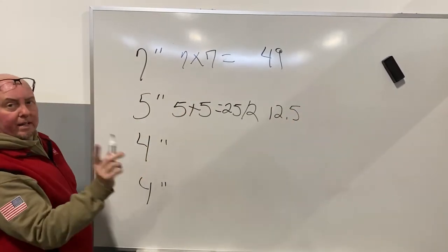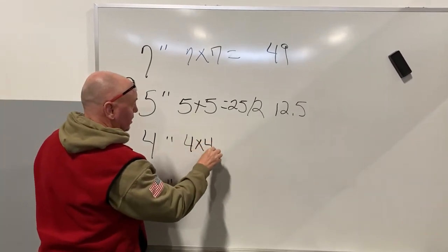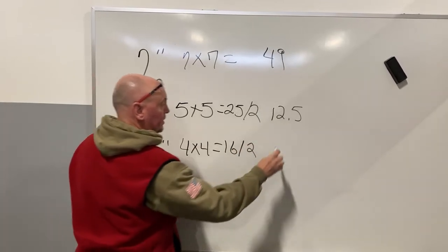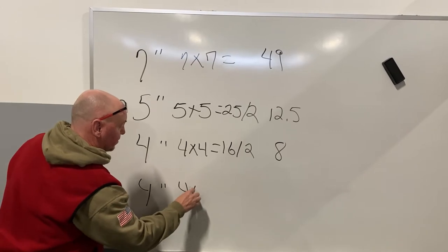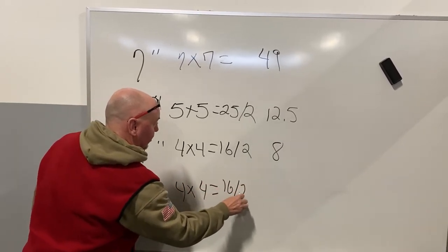The 4 inch, same thing, getting the square inches, 4 times 4 equals 16, divide by 2, 8. Same thing here, divide by 2.